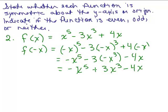So the first question: is that exactly the same as the original function? No, because I have x to the fifth and I have negative x to the fifth for f of negative x. So the second question is: is it the opposite? In other words, is it negative f of x? Are all the terms exactly the opposite sign of the original function?